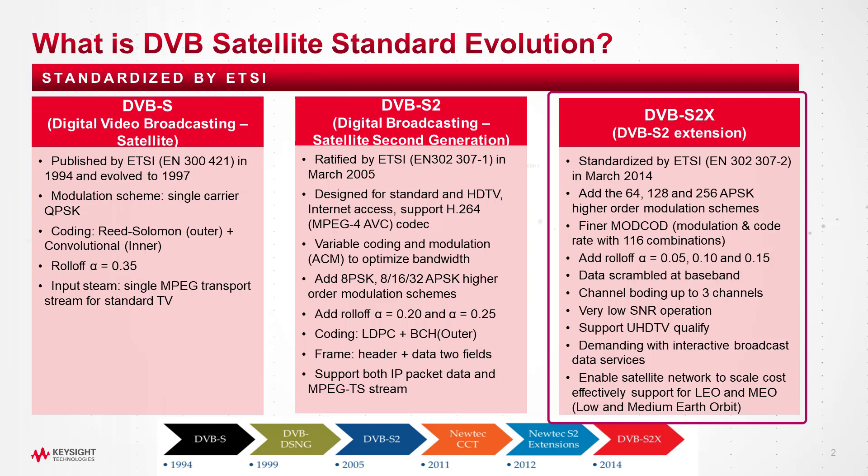DVB-S2 has an extension version called DVB-S2X, standardized by ETSI in 2014. It adds 116 combinations of mode code as the combination of modulation and code rate, supports more shaped roll-off factors, and supports channel bounding up to three channels. It adds Ultra HDTV support and supports very low SNR operation. DVB-S2 is the mainstream on market now, but with more interactive broadband data service demanding, DVB-S2X will be widely deployed in the future.